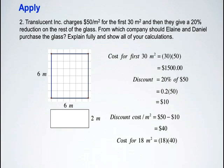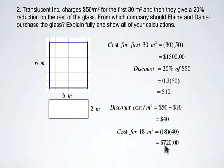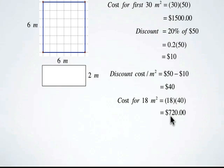Now remember that there was 48 meters squared of glass to begin with. We had 30 meters already calculated here, so we've got 18 meters left. 18 meters squared times the $40 per meter squared gives us $720. If we add the two costs together for the first 30 meters squared and for the discounted 18 meters squared, we have $1,500 plus $720, which gives us a total cost from this company of $2,220.